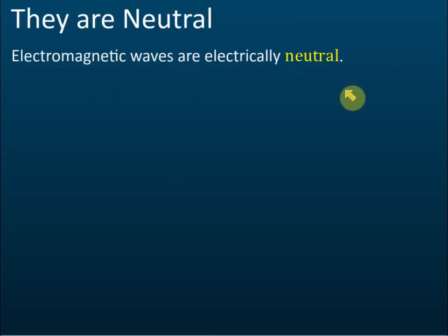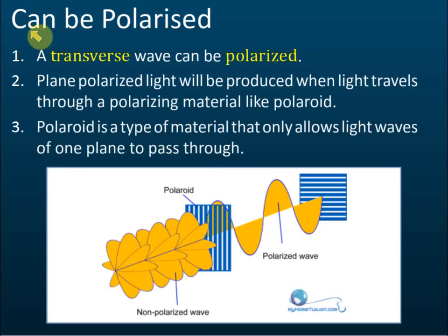Electromagnetic waves are neutral. A lot of students think that since there is an electric field, the wave must carry charge and therefore must be positive or negative. But no — there is no positive or negative charge in the wave. Electromagnetic waves are neutral.